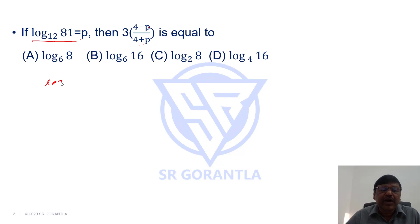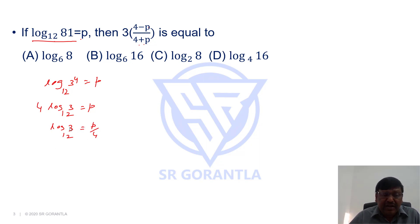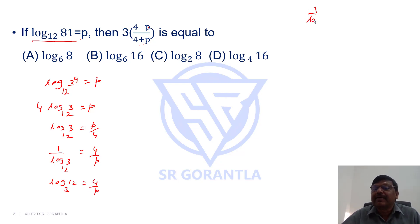We write log 81 base 12 as log 3^4 base 12, which equals p. So 4 log 3 base 12 equals p, giving log 3 base 12 equals p by 4. Taking reciprocals on both sides, 1 by log 3 base 12 equals 4 by p, and 1 by log 3 base 12 can be written as log 12 base 3, since 1 by log m base a equals log a base m.